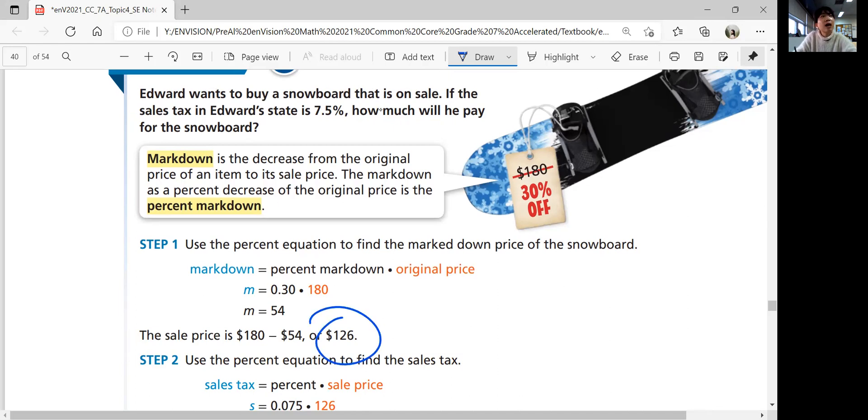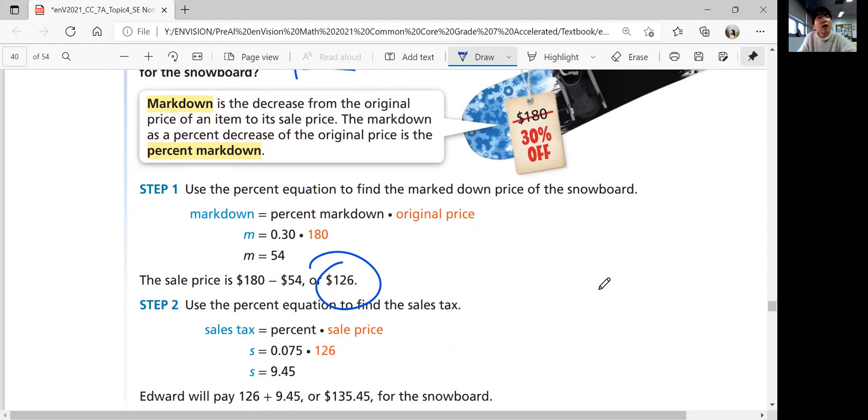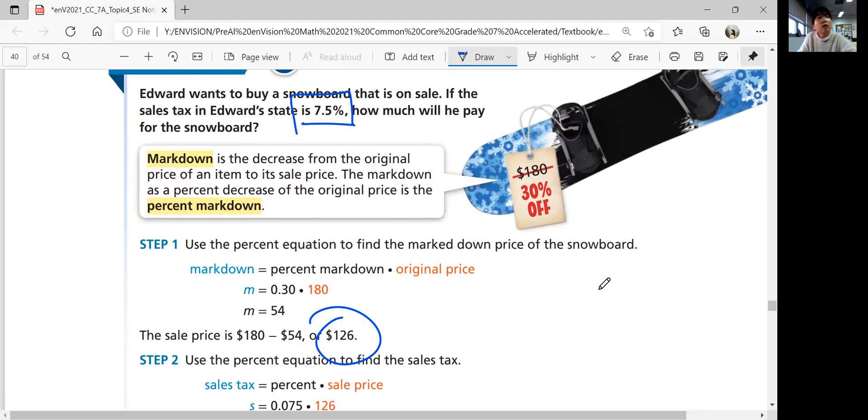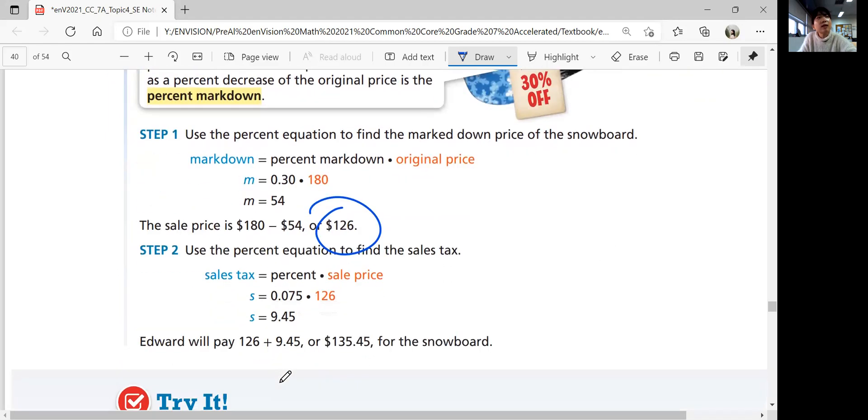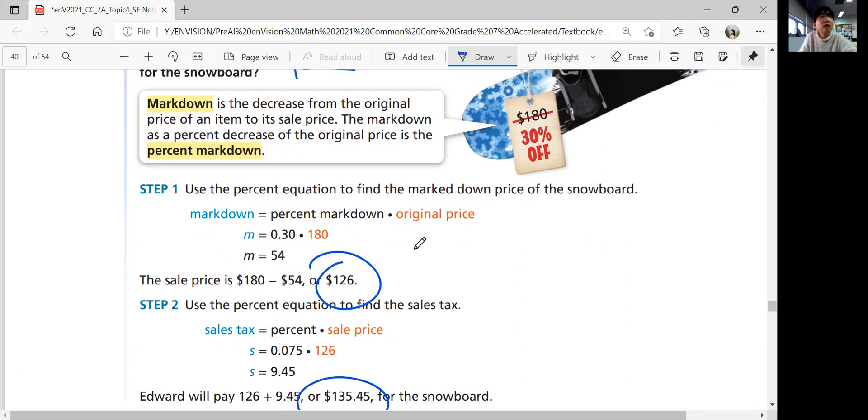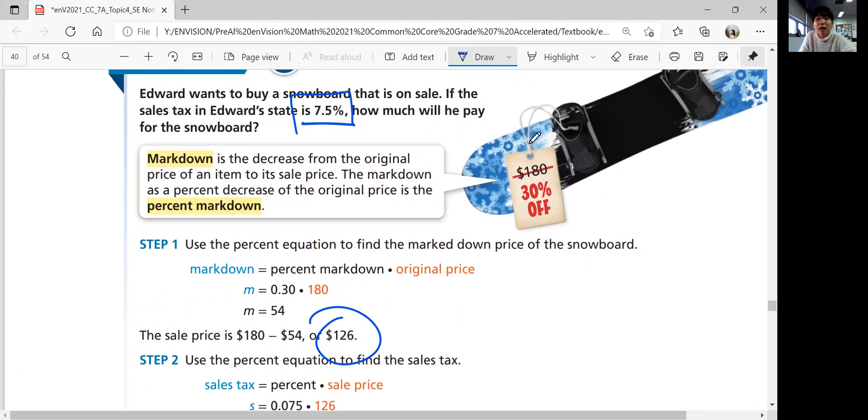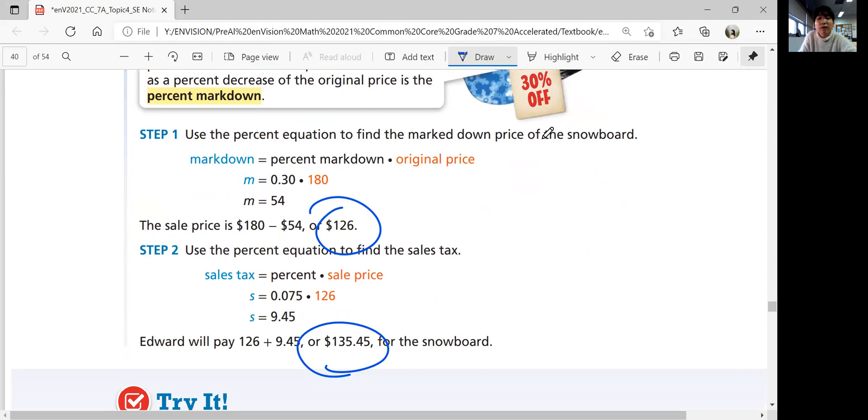But then you have a tax of 7.5%. From that price, you're going to apply the sales tax. You need to get 7.5% of 126, which is 9.45. Then you add it to your 126. You get 135.45, and that's the final price he'll pay for the snowboard. Not bad. Starting from $180, $135.45 is a good deal.